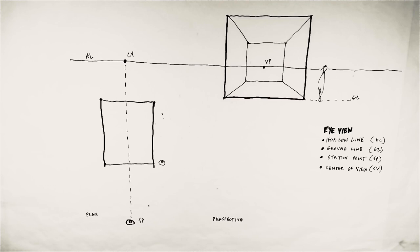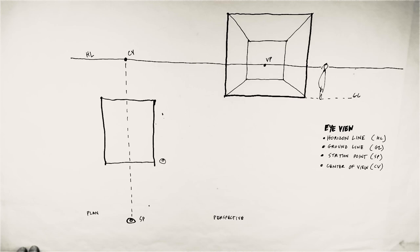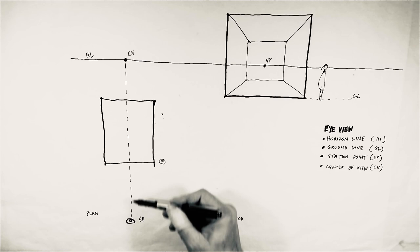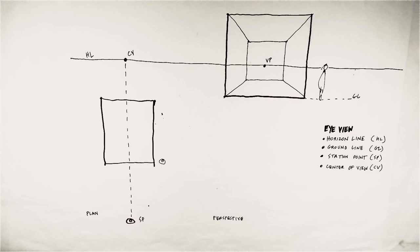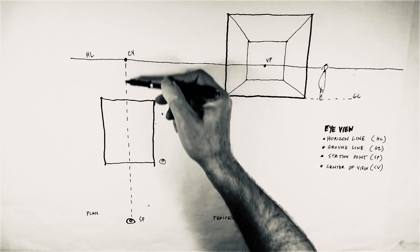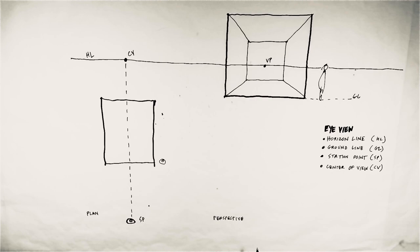Then we're going to talk about center of view, and we're going to talk about that because it's going to become important in the first assignment that we give you this week: one point perspectives. In this case, the center of view is also the center of the object — it's just sort of coincidental at this point. I'm going to show you the next two drawings that actually move that center of view. The center of view is relative to the station point, the viewer, not necessarily the object.